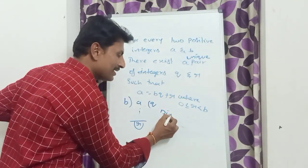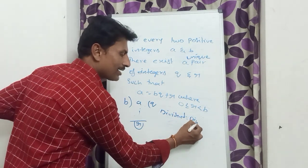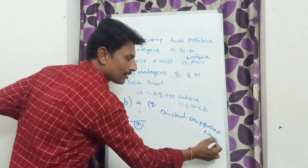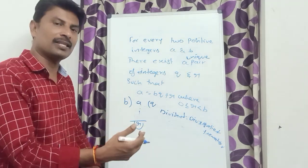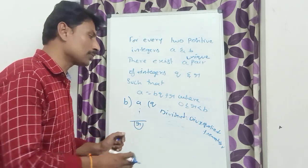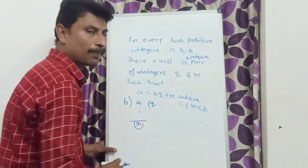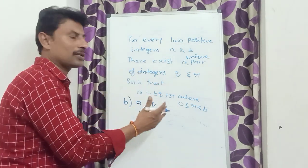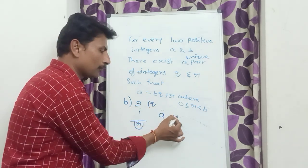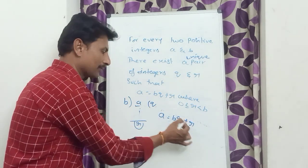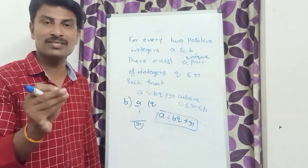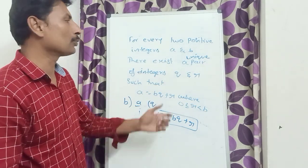In the division algorithm: dividend is equal to divisor into quotient plus remainder. Let us substitute these values in that relation. Dividend A is equal to divisor into quotient, that is B into Q, which is BQ, plus remainder R. So Euclid's division lemma is nothing but just the division algorithm, which is applicable for any two integers A and B.